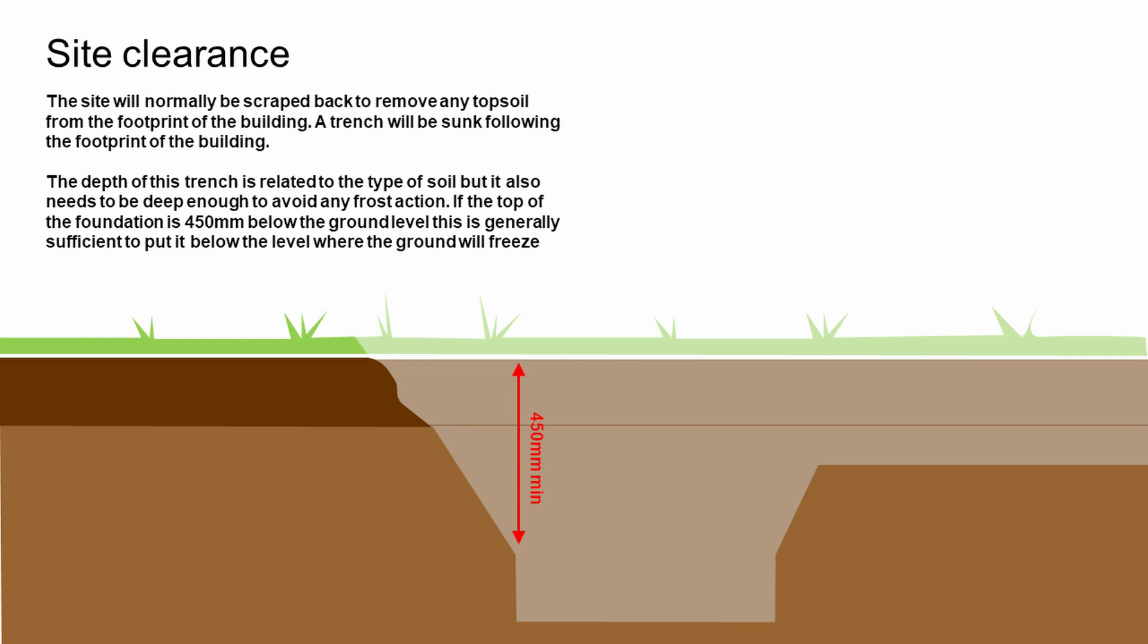In Scotland, what we're trying to achieve is a level for the foundation that would put it down deep enough so that frost is not going to act on it, so we're not getting the ground moving around. This very much depends on the type of ground and the location of the building, but generally we would say 450 millimeters is a kind of standard size.